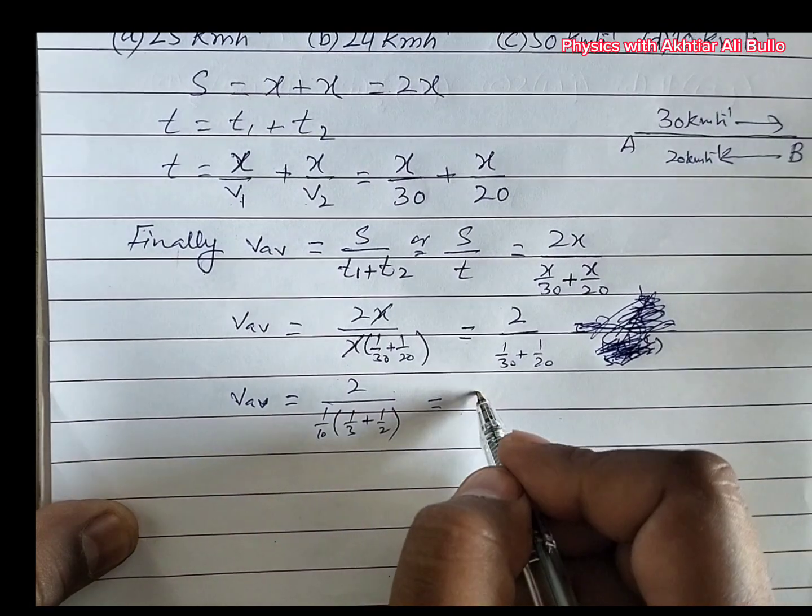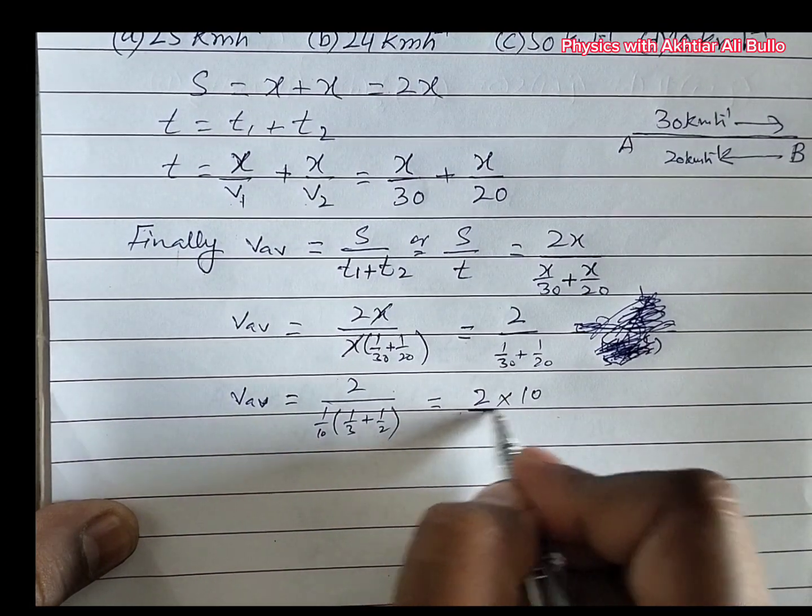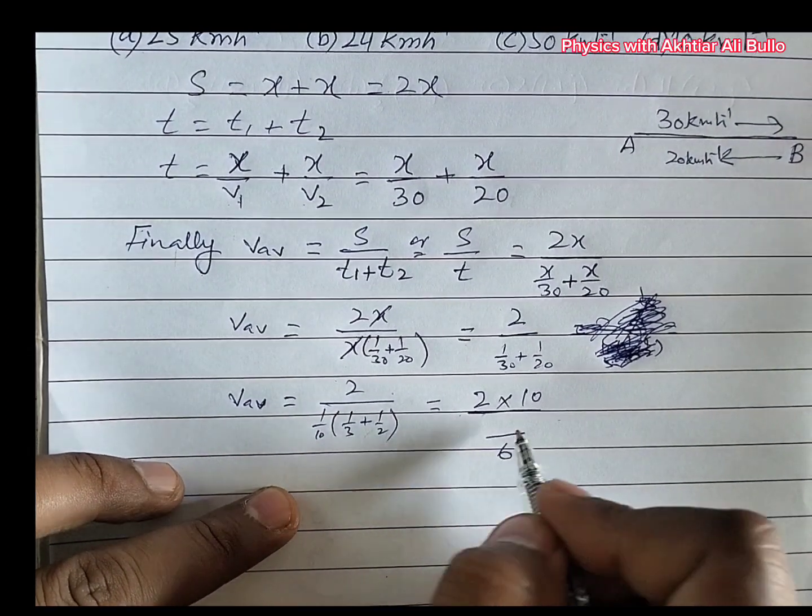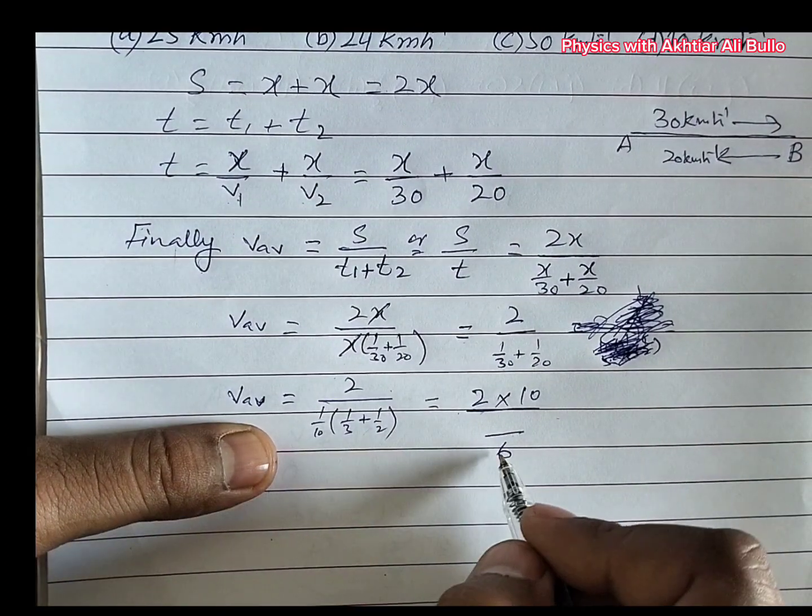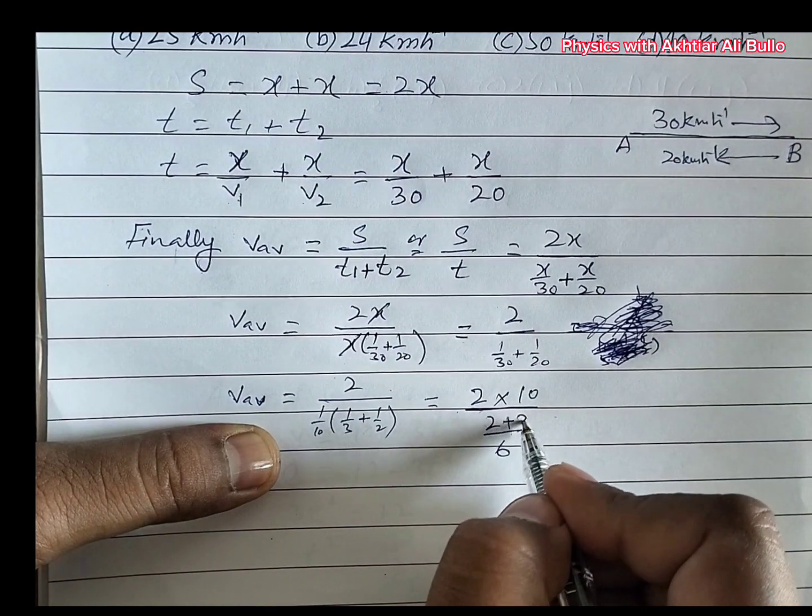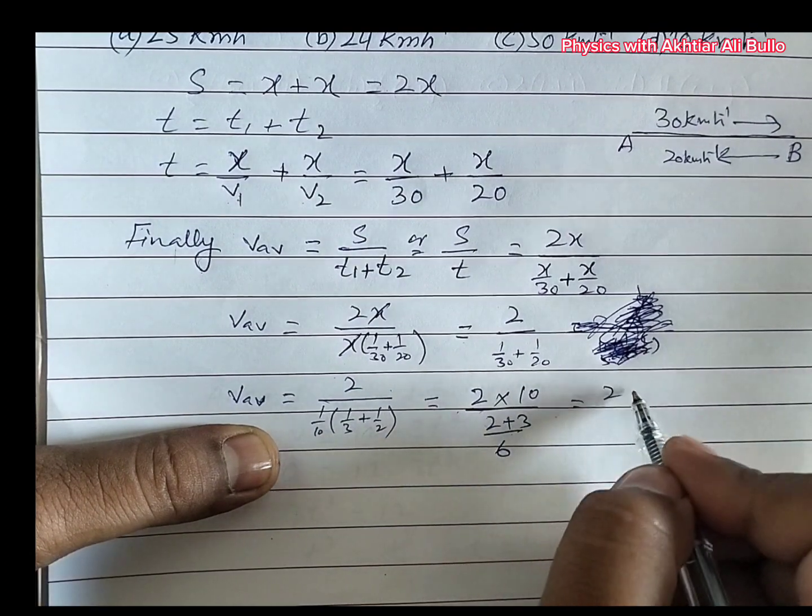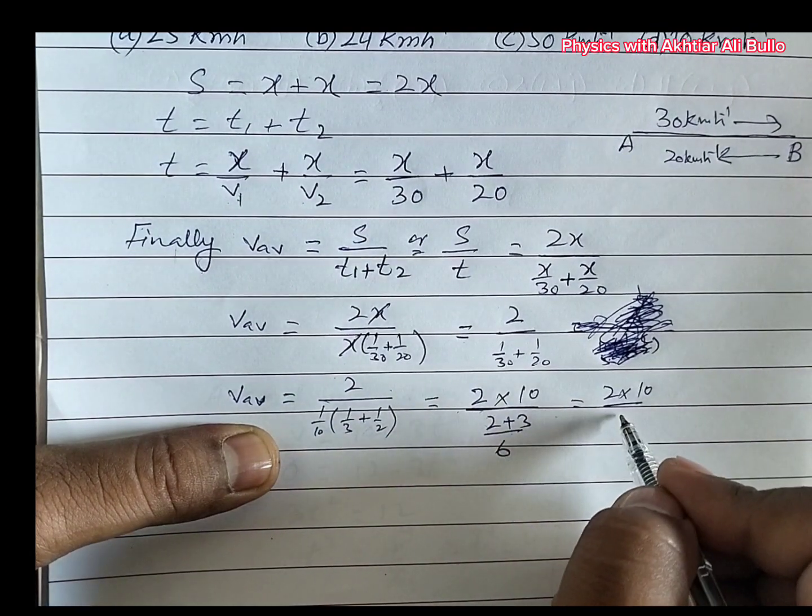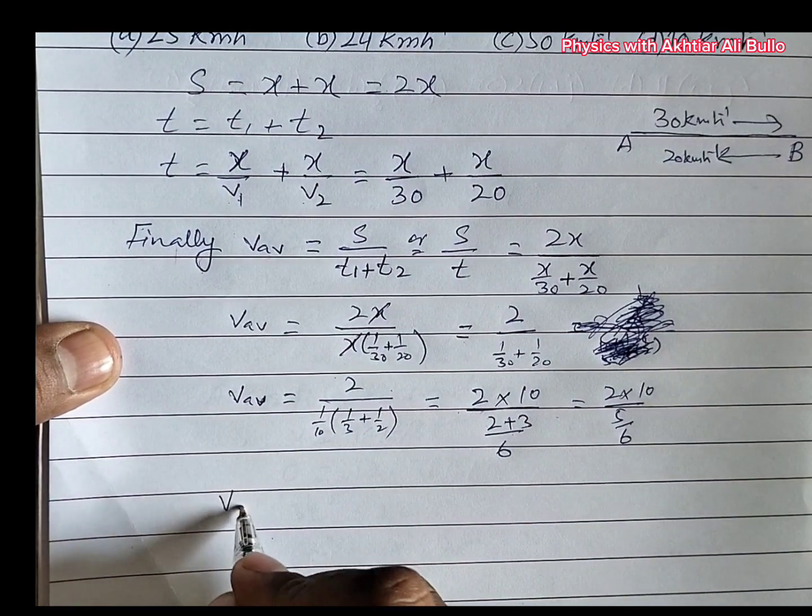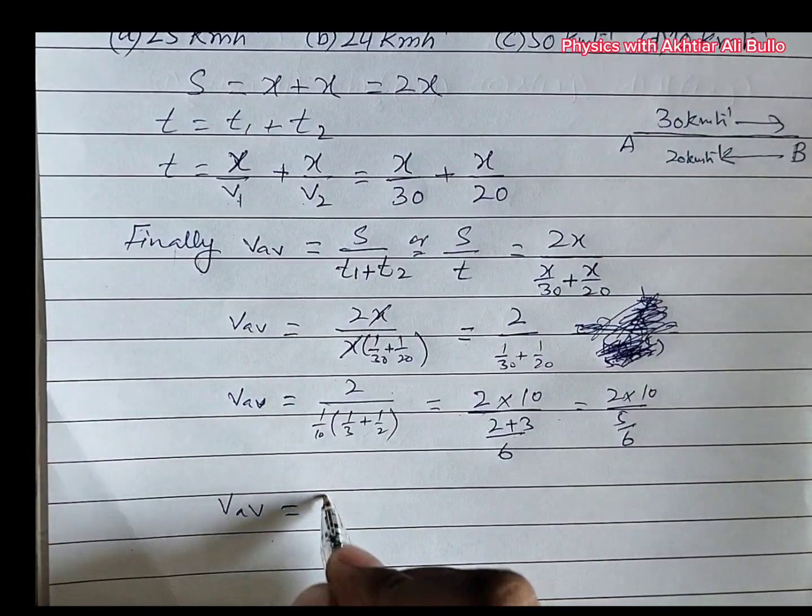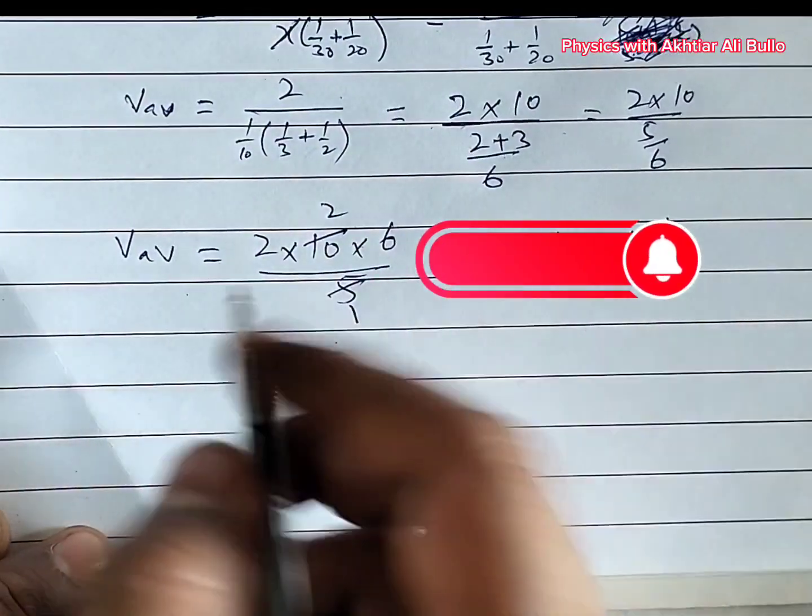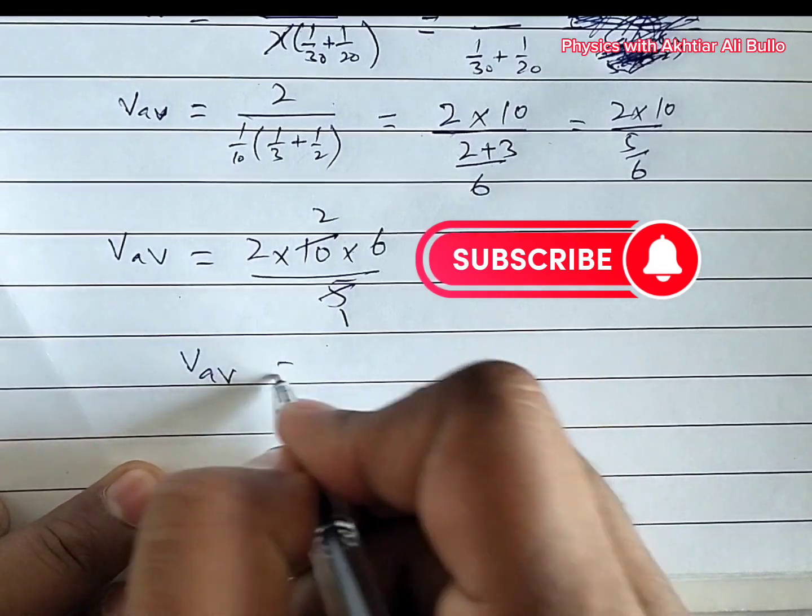So we can also write it as 2 into 10 upon, the LCM of 3 and 2 is 6. The table of 3 on 6 is 2 times, and the table of 2 on 6 is 3 times. So 2 into 10 upon 5 upon 6. So average speed will be obtained as 2 into 10 into 6 upon 5. So average speed is obtained as 24